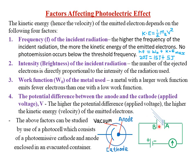If the potential difference between plate A and plate B is very high, the emitted electrons will be accelerated at very high velocities and very high kinetic energy, compared to when the potential difference is lower. These factors can be studied by use of a photocell, which usually consists of a photoemissive cathode and an anode enclosed in an evacuated container.